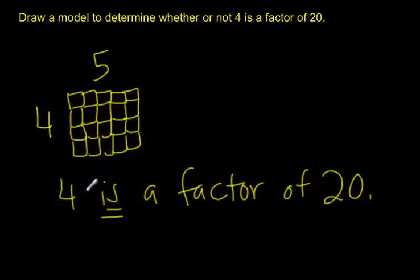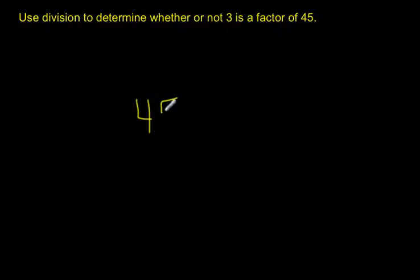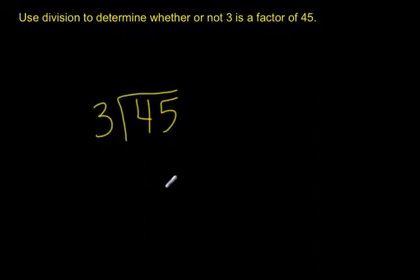One way to find out if a number is a factor of another number is to try to draw a model and see if you can make an array — or if you can't make an array. The second way I'm going to show you is by using division. For this problem, I want to see: is 3 a factor of 45? I'm going to divide 45 divided by 3. The key is to see whether or not I get a remainder at the end.